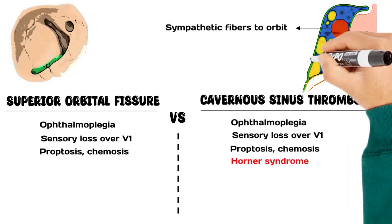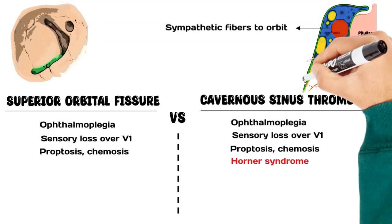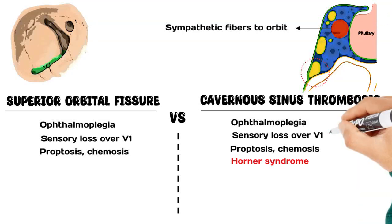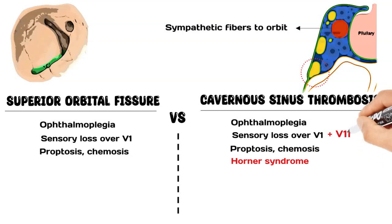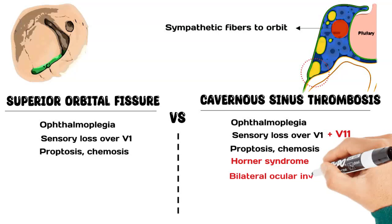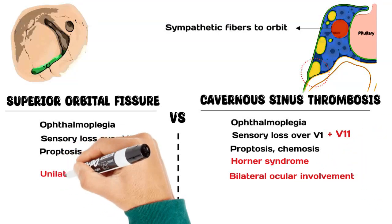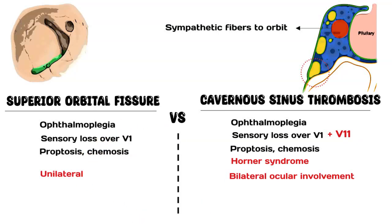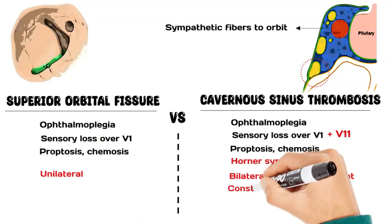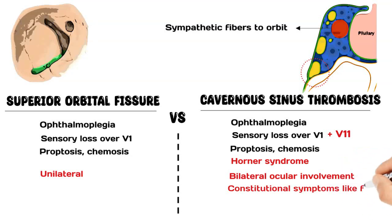The maxillary division of the trigeminal nerve runs within the wall of the cavernous sinus, so cavernous sinus thrombosis is associated with sensory loss over the cheek as well. Additionally, cavernous sinus thrombosis is frequently bilateral, while superior orbital fissure syndrome is unilateral. Cavernous sinus thrombosis is also associated with constitutional symptoms like fever.